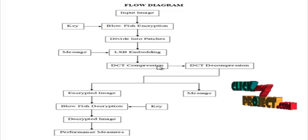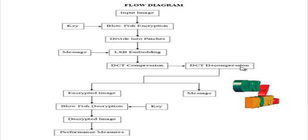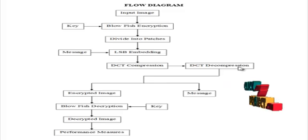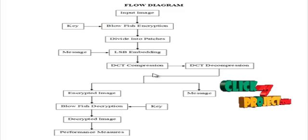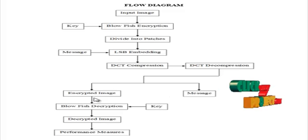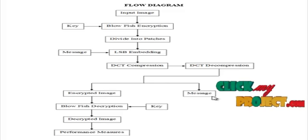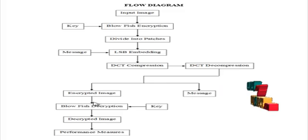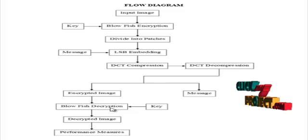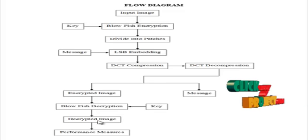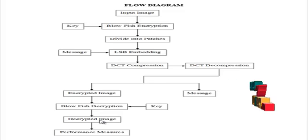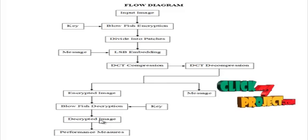On the receiver side, after receiving the compressed image, the receiver first decompresses the image, producing the encrypted image with secret information. After that, the LSB embedding process is reversed in order to obtain the encrypted image and the message given by the user. The encrypted image is then decrypted based on the same Blowfish decryption process, using a generated key. The decrypted image and the input image are compared by means of performance measures like PSNR and MSE.